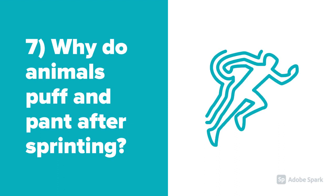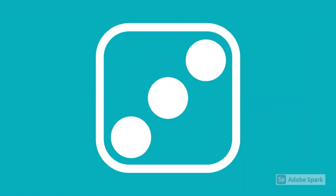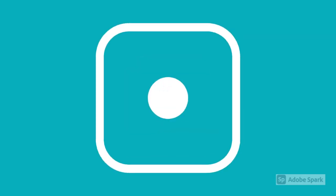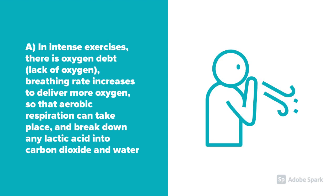Question number seven: Why do animals puff and pant after sprinting? During intense exercise, there is oxygen debt or a lack of oxygen, so the breathing rate increases to deliver more oxygen so that aerobic respiration can take place and to break down any lactic acid into carbon dioxide and water.